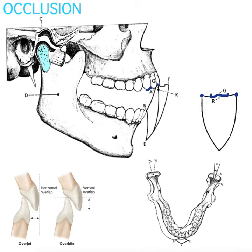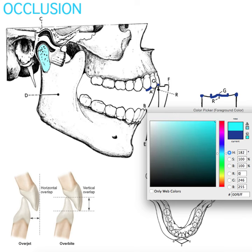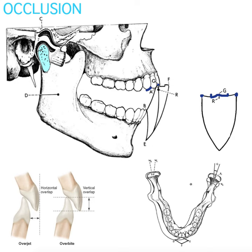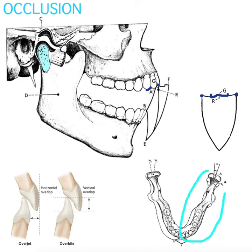When we talk about the lateral movement of the mandible, there are two sides. The working side is where the mandible moves toward — here's where the mandible was and here is where it moved to. The non-working or balancing side is the opposite. If we move the mandible to the left, the roles switch: the left becomes the working side and the right becomes the non-working side.